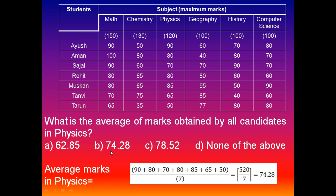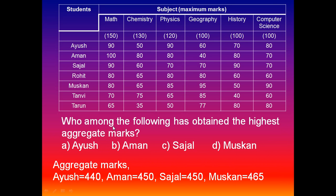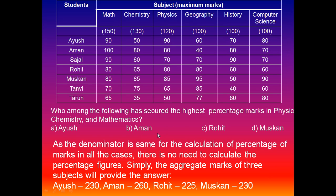Next question: who among the following has obtained the highest aggregate marks? Aggregate means the sum of all marks. Ayush gets 90 plus 50 plus 90 plus 60 plus 70 plus 80, that is 440. Aman gets 100 plus 80 plus 80 plus 40 plus 70 plus 70, that is 440. Sagel gets 450. Muskan gets 80 plus 65 plus 80 plus 85 plus 95 plus 90, that is 465. Muskan gets the highest marks, so the answer is Muskan.